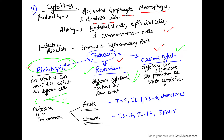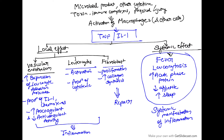In acute inflammation, the major cytokines produced are TNF, interleukin-1, interleukin-6, and chemokines. In chronic inflammation, these are interleukin-12, interleukin-17, and interferon-gamma. Any microbial product, toxin, immune complex, or physical injury leads to activation of macrophages or other cells, which then produce TNF or interleukin-1.